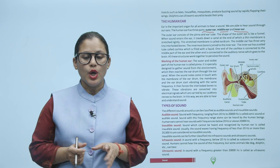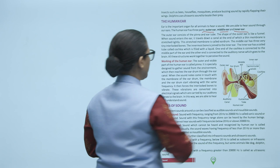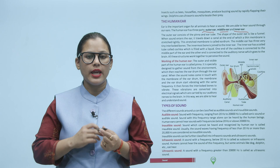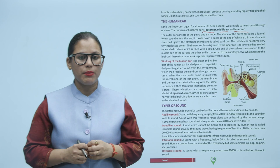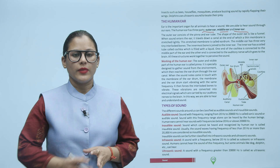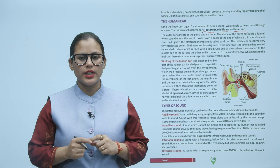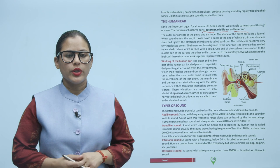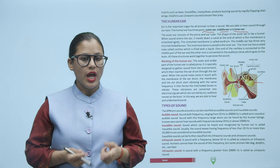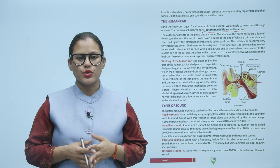Outer ear mein hote hain pinna aur ear tube. The shape of the outer ear is like a funnel. When sound enters the ear, it travels down the canal. The thin membrane stretched tightly at the end is called the eardrum. In the middle ear, there are three interlocked bones. The innermost bone is attached to the inner ear. In the inner ear there is a coiled tube called cochlea, filled with liquid, connected to the middle ear on one end and to the auditory nerve going to the brain on the other. All these structures work together so we perceive sound.